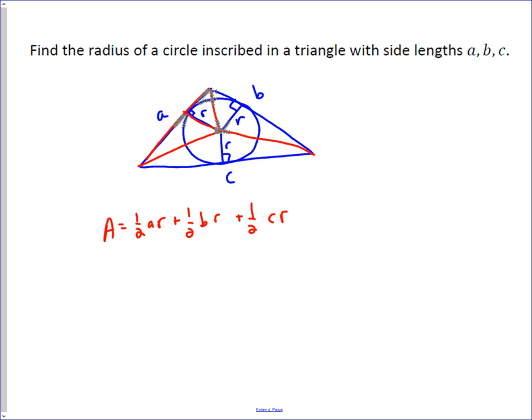And so if I just do a little bit of simplification, I can see that A equals, well, factor out the one-half R, and what you're left with is A plus B plus C.